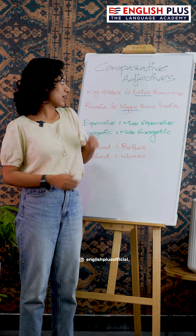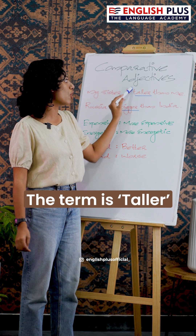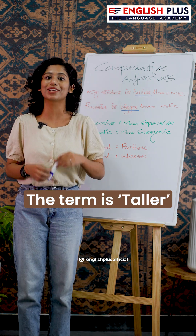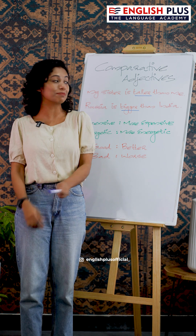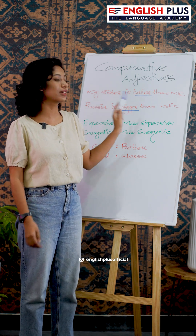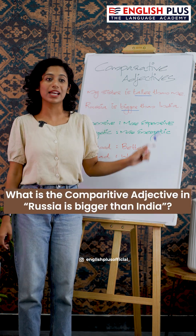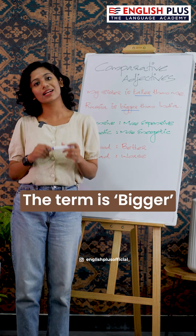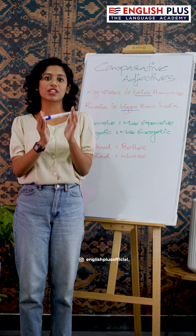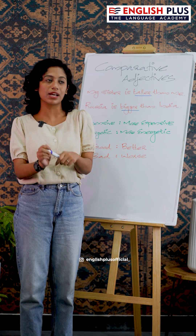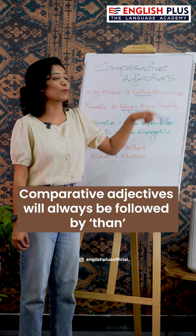In the sentence 'My sister is taller than me,' taller is the comparative adjective. In 'Russia is bigger than India,' bigger is the comparative adjective. A comparative adjective will always be followed by 'than'.